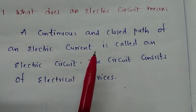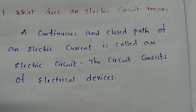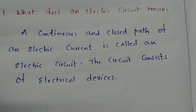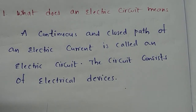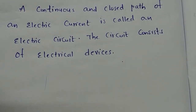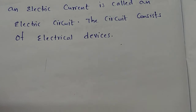What does an electric circuit mean? That is the first question we are having now. A continuous and closed path of an electric current is called an electric circuit. This circuit consists of electrical devices. We will discuss this in diagram mode.